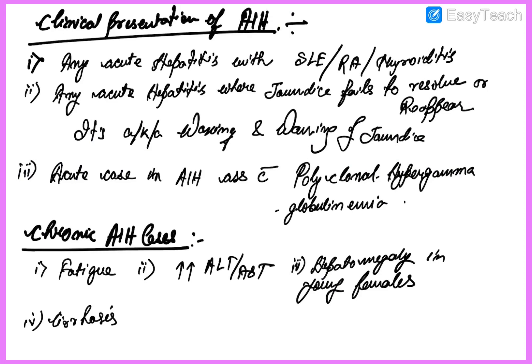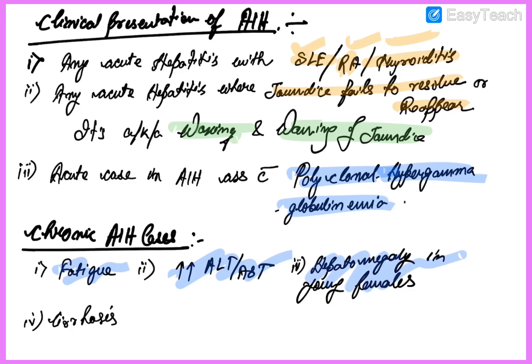The clinical presentation of AIH: in acute hepatitis, it is always associated with SLE, rheumatoid arthritis, or thyroiditis. If jaundice fails to resolve or reappears in acute hepatitis, we can diagnose AIH — this is also known as waxing and waning of jaundice. AIH is also associated with polyclonal hypergammaglobulinemia. In chronic AIH, fatigue, increased ALT/AST ratio, hepatomegaly in young females, and cirrhosis are common findings.